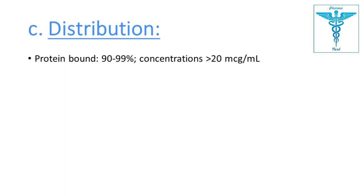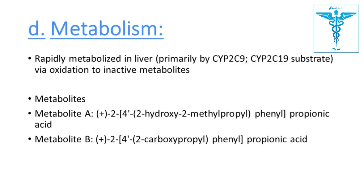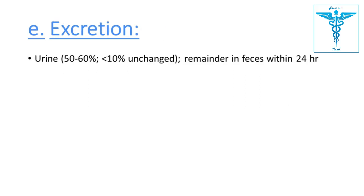Distribution: 90 to 99% of the drug is protein bound. Metabolism: ibuprofen is rapidly metabolized in the liver via oxidation to form inactive metabolites. Excretion occurs through urine at 50 to 60%, with less than 10% of the drug remaining unchanged.